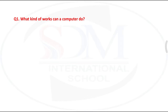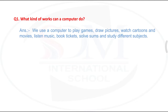What kind of works can a computer do? To play games, draw pictures, watch cartoons and movies, listen to music, book tickets, solve sums and study different subjects. So on a computer we can play games,